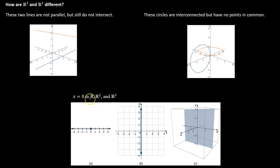Let's compare what x equals 0 looks like in our three different spaces. In one dimension it was a point on a number line. In two dimensions, x equals 0 became a line. In three dimensions, x equals 0 is represented as an entire plane. So one equation can be represented very differently depending on which coordinate system you're considering, and we'll have to keep that in mind.